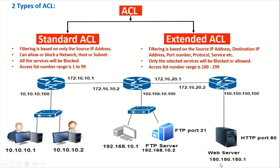For another example, consider a web server running a web application on HTTP port 80, and I want to give access to the entire LAN network 10.10.10.0/24 to access that web application. I can write an extended ACL saying: permit source 10.10.10.0/24 to destination 150.150.150.1, destination port 80 for HTTP service.